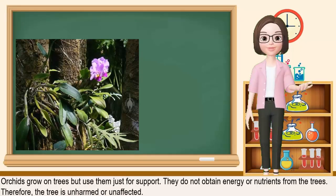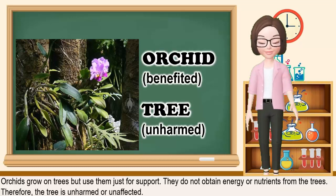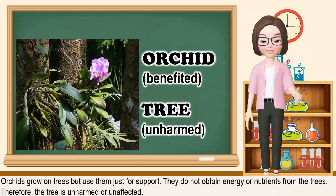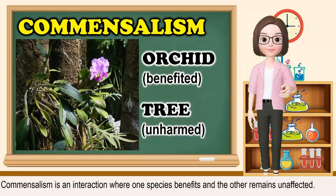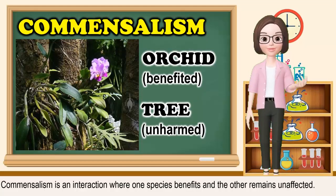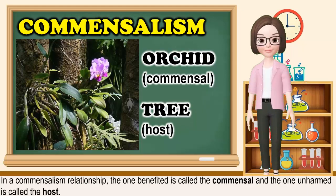Take a look at this picture. What organisms can you see? You are correct! Orchids on a tree. Orchids grow on trees but use them just for support. They do not obtain energy or nutrients from the trees. Therefore, the tree is unharmed and unaffected. This relationship is called commensalism. Commensalism is an interaction where one species benefits and the other remains unaffected. In a commensalism relationship, the one benefited is called the commensal and the one unharmed is called the host.